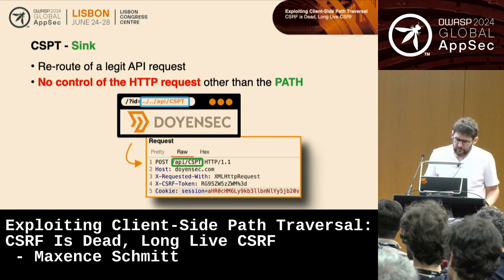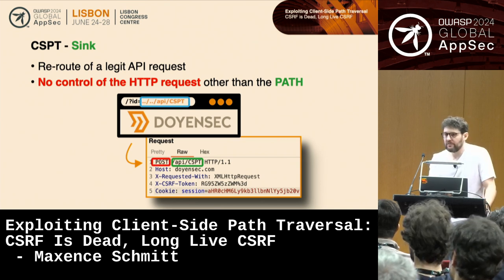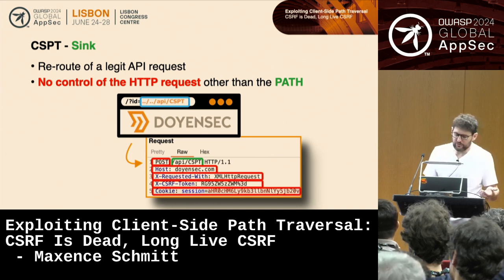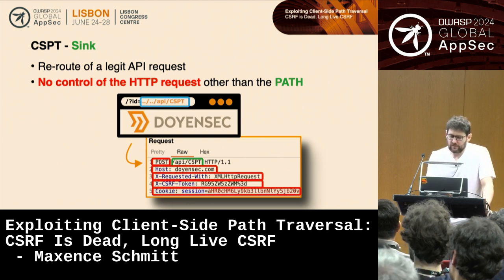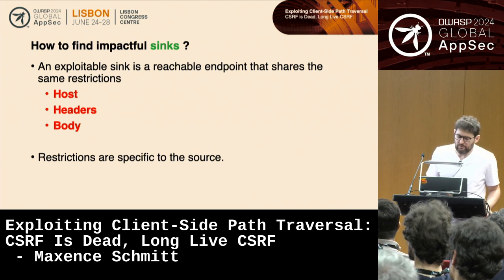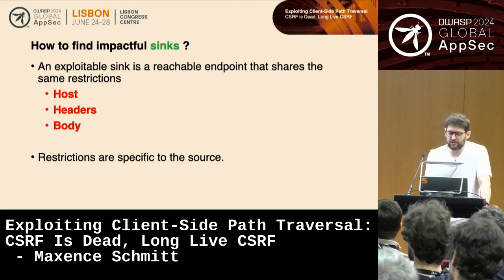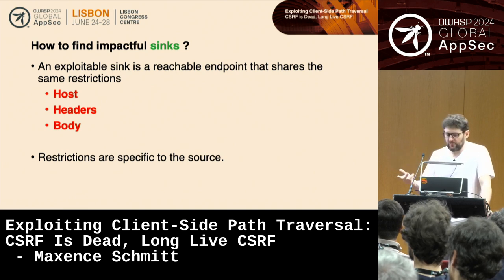As an attacker, we are able to control the path but not the HTTP method — that is chosen by the front end. We cannot control the host or any request headers, and the body will not be controllable either. These are quite hard restrictions. However, we want to find impactful endpoints that share those same restrictions: same host, same headers. If we find something, we will be able to perform CSPT-to-CSRF with meaningful impact. These restrictions depend on the specific request made by the front end.